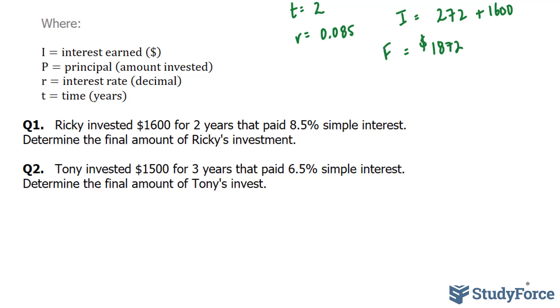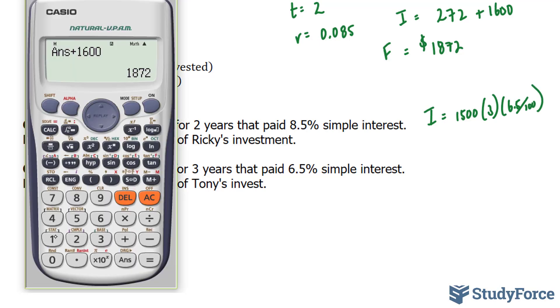So to do this, once again, I is equal to 1,500 times 3 times 6.5 divided by 100. Using our calculator, 1,500 times 3 times 6.5 divided by 100.